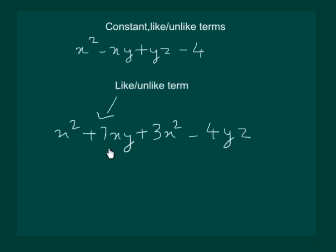The term 7xy has x and y as literals, while -4yz has y and z as literals. So 7xy and -4yz are unlike terms of this algebraic expression. Since the concept of like terms is extremely important, let us take another example and try to understand it further. In this chapter we shall be adding and subtracting like terms only.